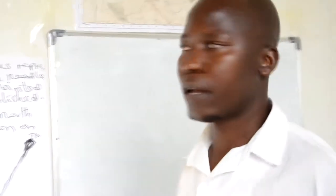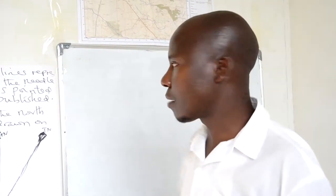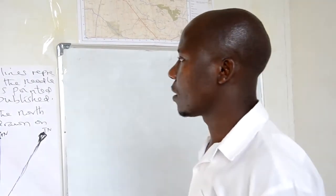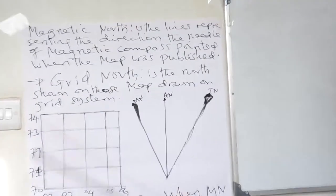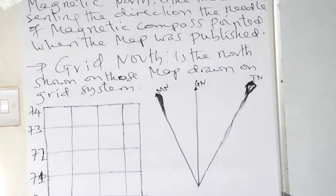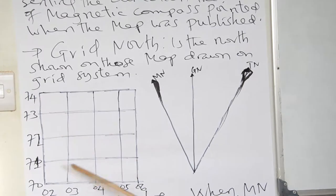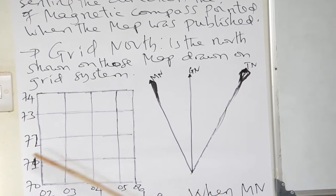For instance, in civil engineering, a certain construction or a certain landmass — you can use it. The Green North is the north shown by the map drawn on the grid system. This is the structure I have drawn on my board: this is the structure of Grid North or Green North.